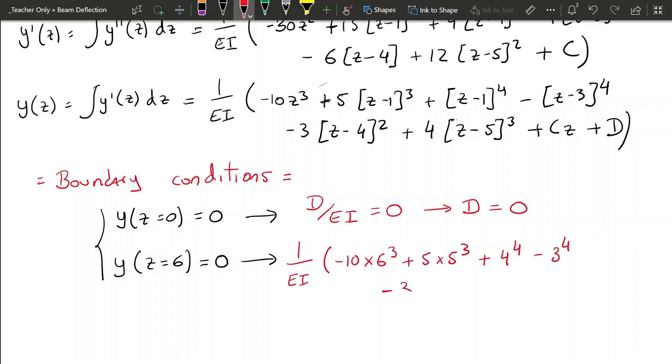minus 3 times 2 squared, plus 4 times 1 cubed, plus C times 6. And we know that all of this has to be equal to 0.